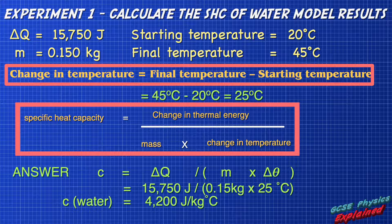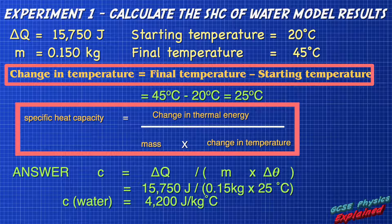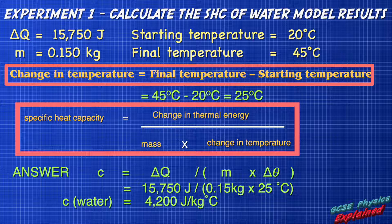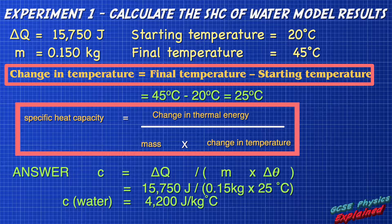Here's how to calculate the specific heat capacity using the model results. The specific heat capacity of water is 4200 joules per kilogram per degree Celsius. Your answer from your actual experiment should come out somewhere close to that value if you've done it right.